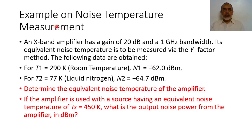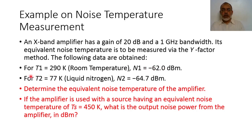As an example of noise temperature measurement, we have an X-band amplifier with a gain of 20 dB and 1 GHz bandwidth. Its equivalent noise temperature is to be measured by the Y-factor method. The following data are obtained: T1 is the ambient temperature at 290 Kelvin, and the measured output noise N1 at this temperature was minus 62 dBm. The cold matched load T2 is at 77 Kelvin, which is liquid nitrogen.